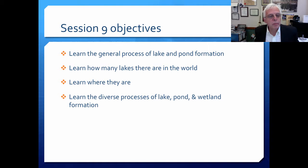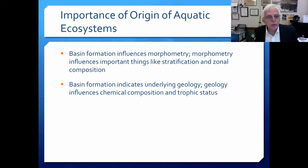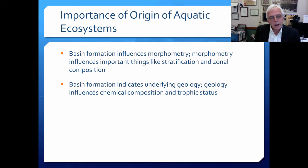My objectives for this session are simple: learn the general process of lake and pond formation, learn how many lakes there are in the world, learn where they are, and learn the diverse processes of lake, pond, and wetland formation. Basin formation really influences morphometry, and morphometry influences important things like stratification and zonal composition — extremely important characteristics for understanding the ecology of these systems.